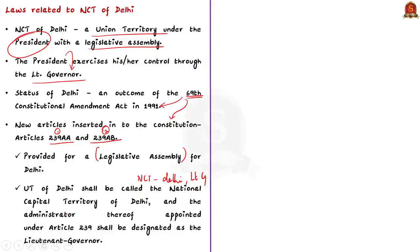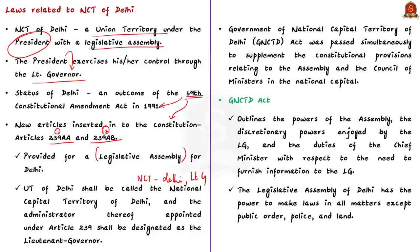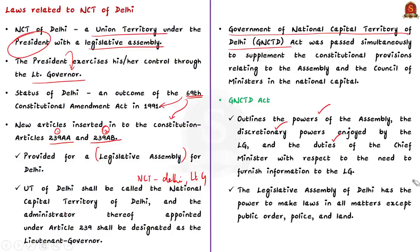To supplement the constitutional provisions relating to the assembly and council of ministers in the National Capital, the Government of National Capital Territory of Delhi Act was passed simultaneously. The GNCTD Act outlines features like the powers of the assembly, the discretionary powers enjoyed by the Lieutenant Governor, and the duties of the Chief Minister regarding the need to furnish information to the Lieutenant Governor. According to this act, the legislative assembly of Delhi has the power to make laws in all matters except public order, police, and land.